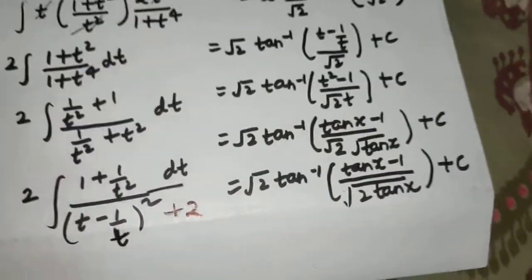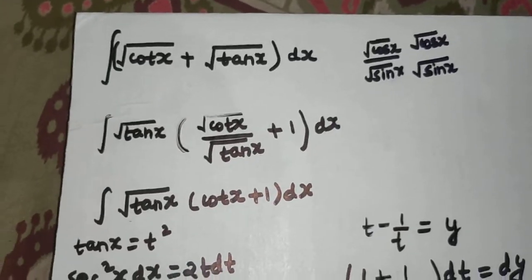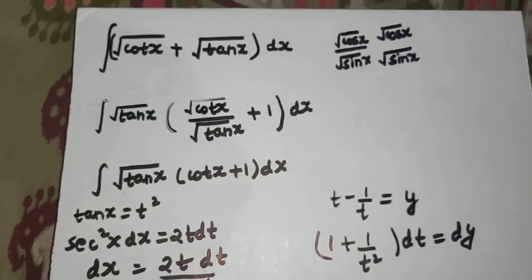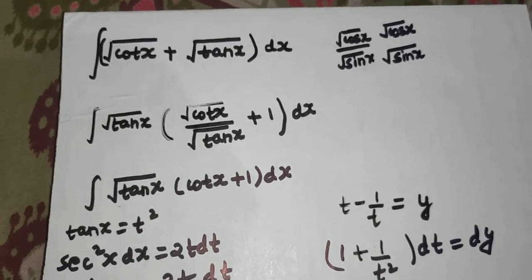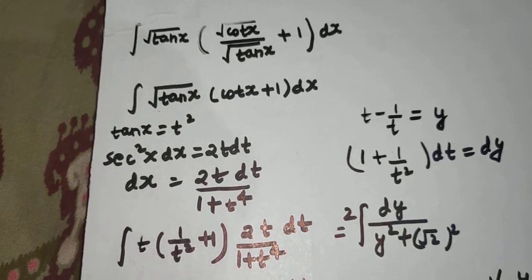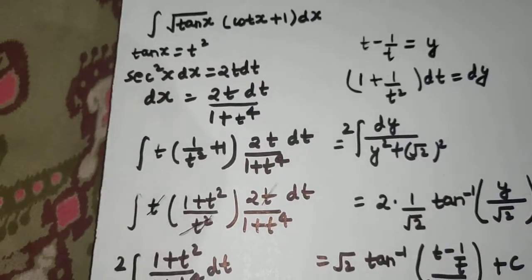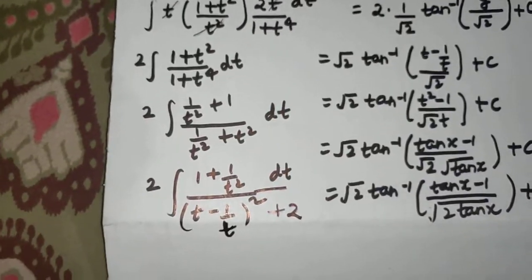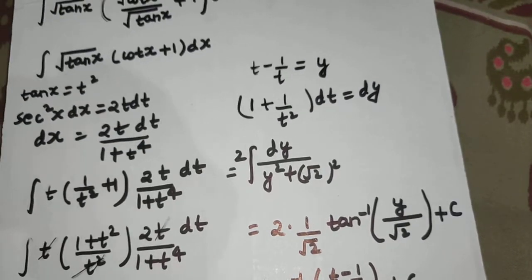I hope you learned something from this video. This was just one method. If you found it lengthy, we'll come to another method in a couple of videos. But concentrate here — you need to understand each and every step. First, I took √(tan x) out, giving cot x + 1 inside. Then we took the substitution tan x = t² because it was inside the root.